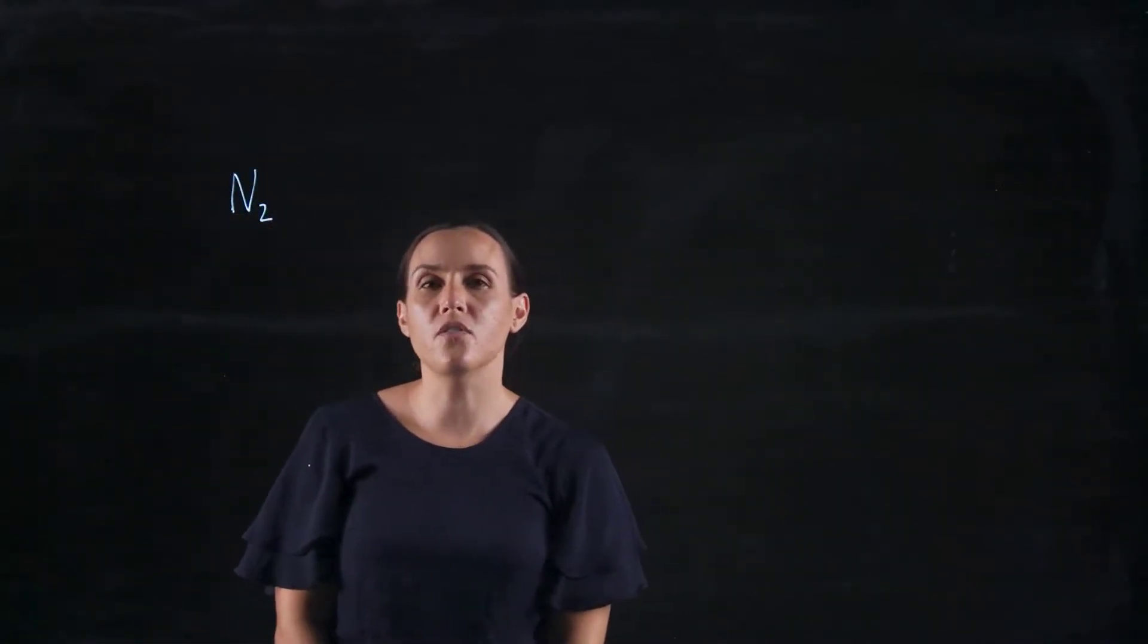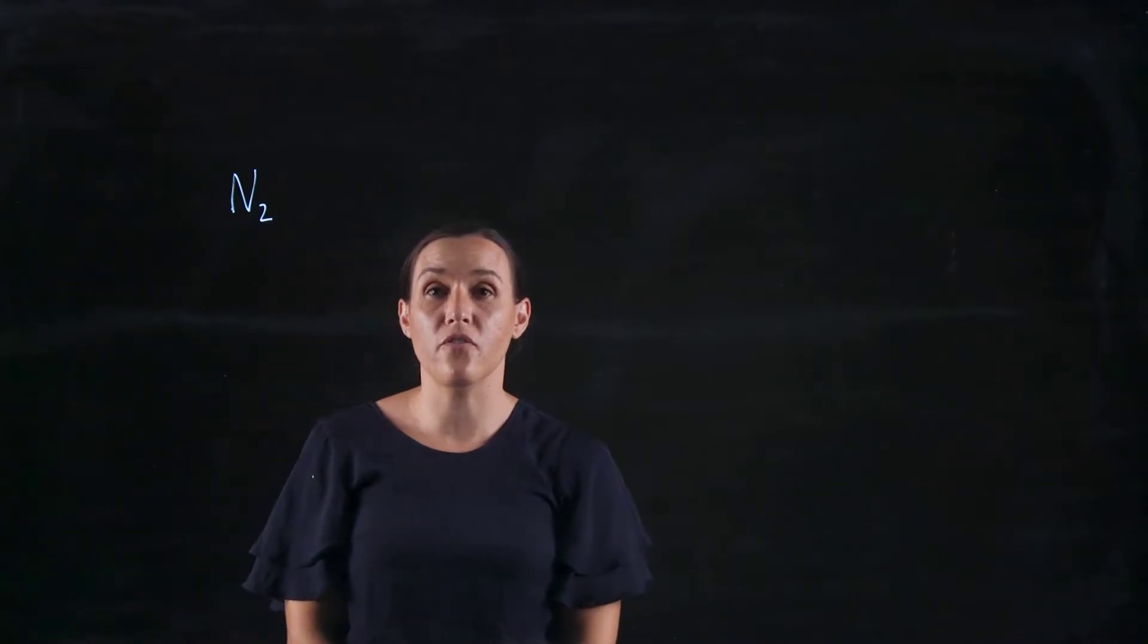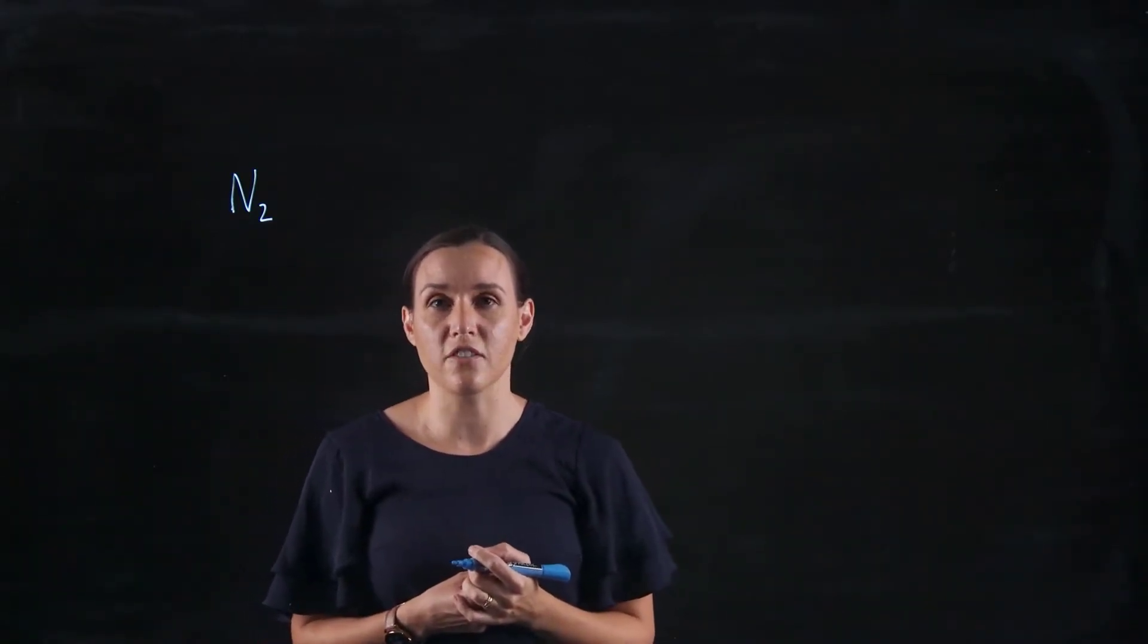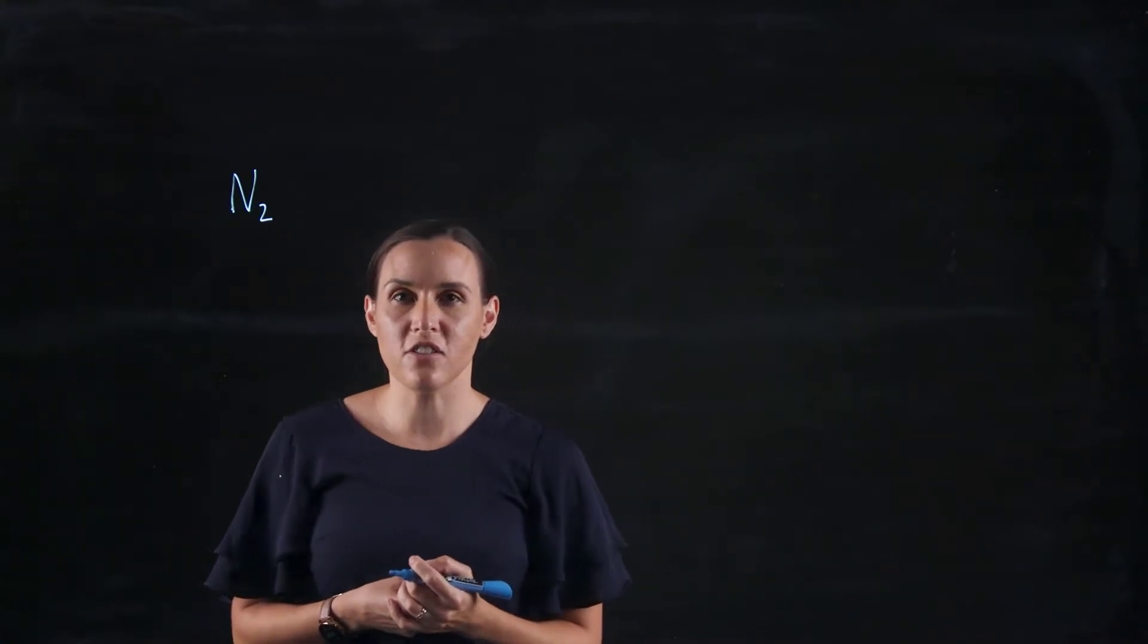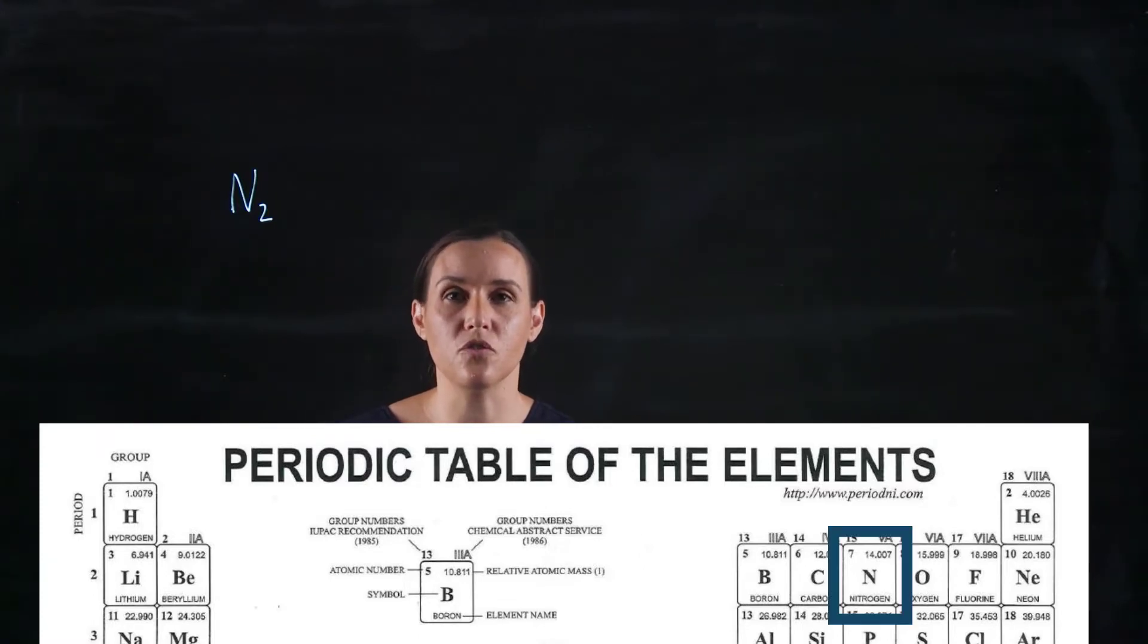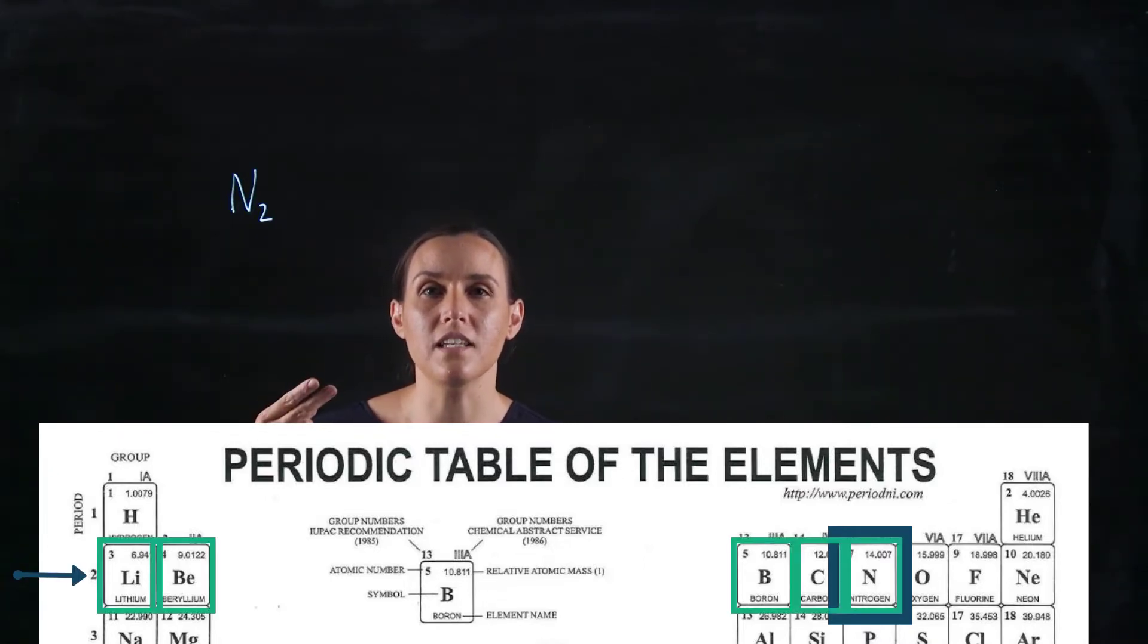So with N2, first of all we want to look at the total number of valence electrons. So how many valence electrons are there in each of the nitrogens? When you look up nitrogen on the periodic table, it has seven protons and seven electrons when it's neutral.